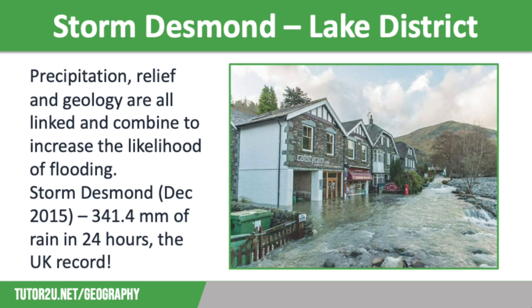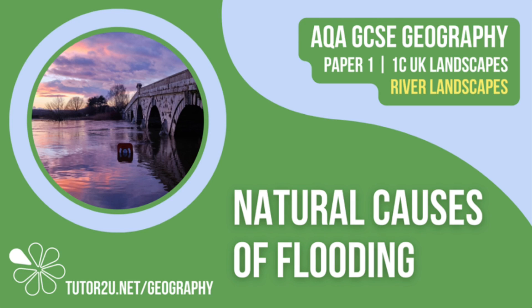A good example is the devastation caused in the village of Glenridding in December 2015, which you can see on the screen, following Storm Desmond. The storm caused 341 millimetres of rainfall in 24 hours, which is the highest ever rainfall total recorded in the UK. That concludes this Tutor2U revision video focusing on the natural causes of flooding. Thank you for watching.